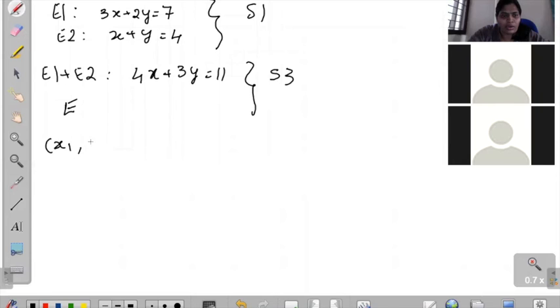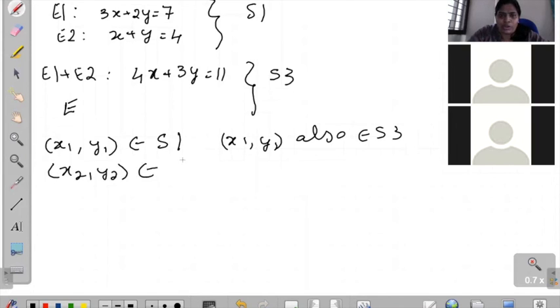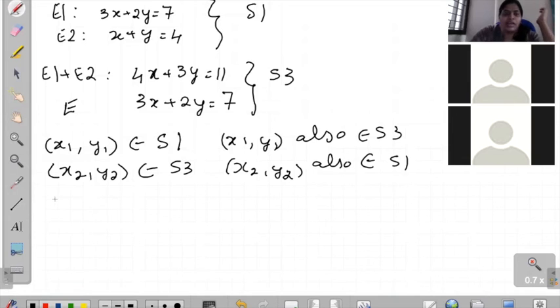So for any x1, y1 that belongs to S1, we have to show that it also belongs to S3 and converse, if there is any x2, y2 belonging to S3, x2, y2 also belongs to S1. So this we can do by just using x1, y1 instead of x, y in E3. So once we have x1, y1, we can do this adding and subtracting and all. We are dealing with a value, so we can show.